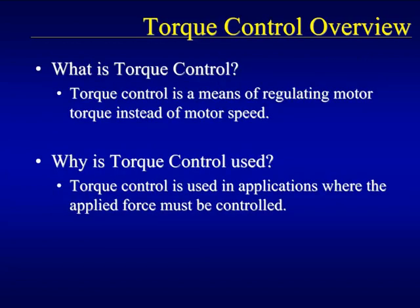In simplest terms, Torque Control is a means of regulating motor torque instead of motor speed. Most people are familiar with Speed Control — a speed reference is supplied to the drive and the drive runs the motor at the commanded speed. With Torque Control, a torque reference is supplied to the drive and the drive runs the motor at the commanded torque. Torque Control is used in applications where the force applied to an application must be controlled.